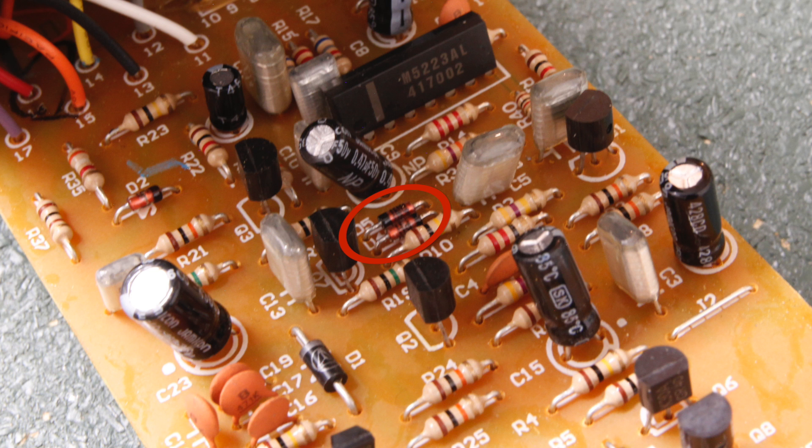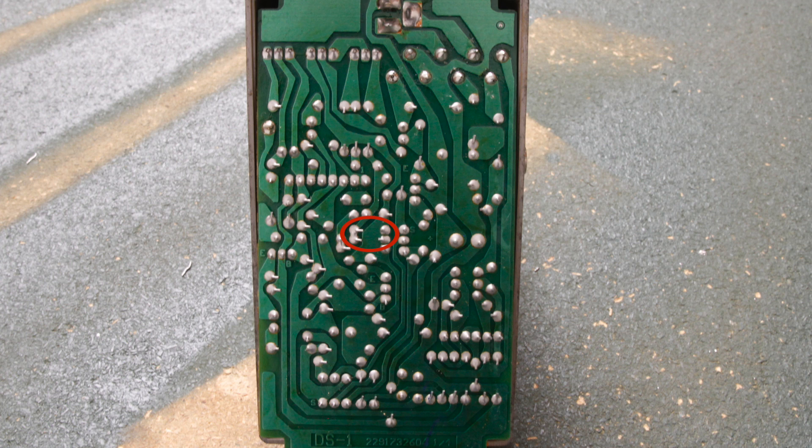If you want to properly remove the diodes and prep for replacement, we'll need to desolder them. Find the corresponding solder pads on the other side of the board for these diodes. They are circled here.